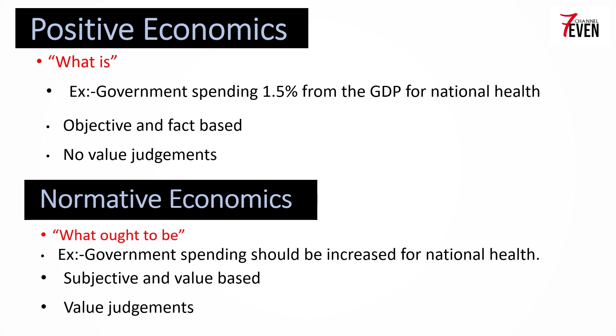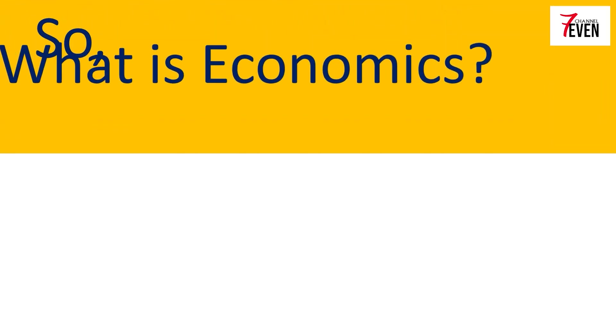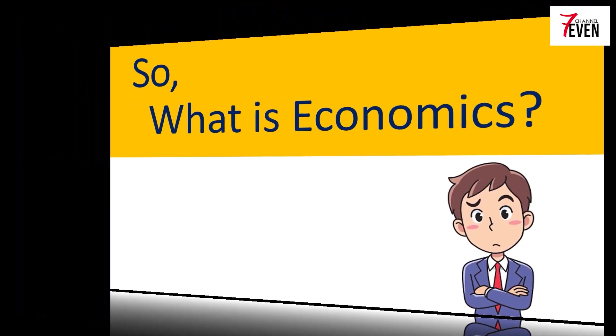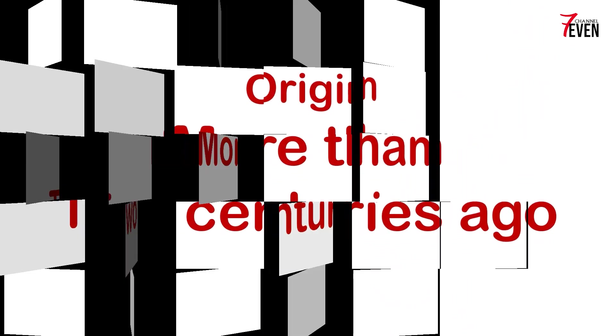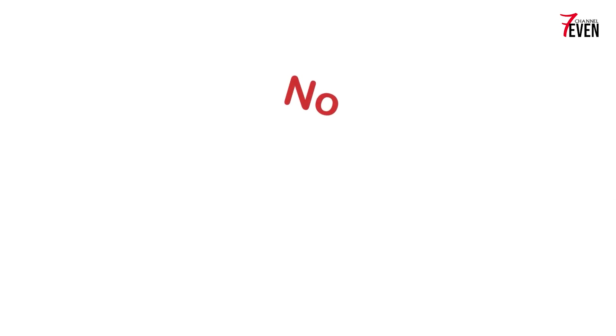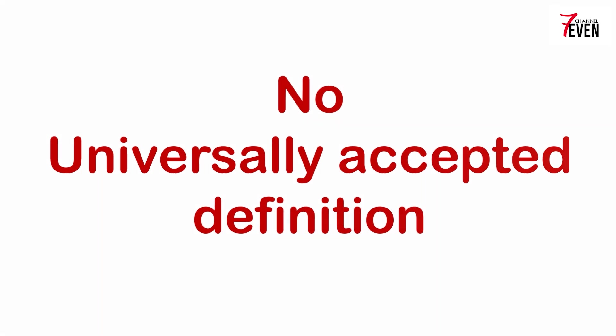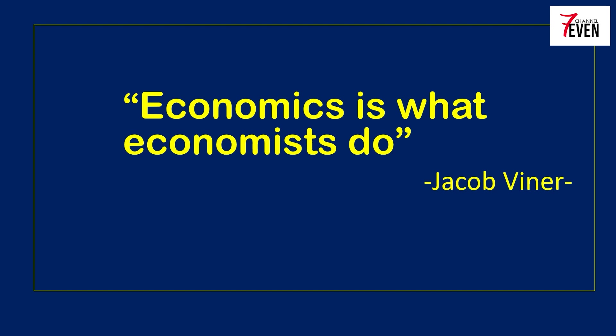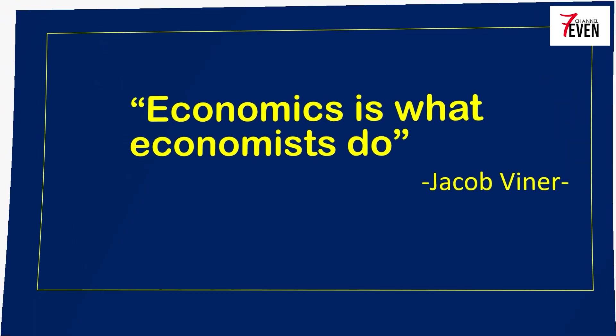Positive economic statements are objective and fact-based, but normative economic statements are subjective and value-based. Positive economics has no value judgments, but normative economics does have value judgments. Economics has been variously defined since the days of its origin more than two centuries ago, but there is no universally accepted definition. The boundaries of economics are not yet finally charted as they continue to expand. Perhaps the best definition was provided by Canadian economist Jacob Viner: economics is what economists do.